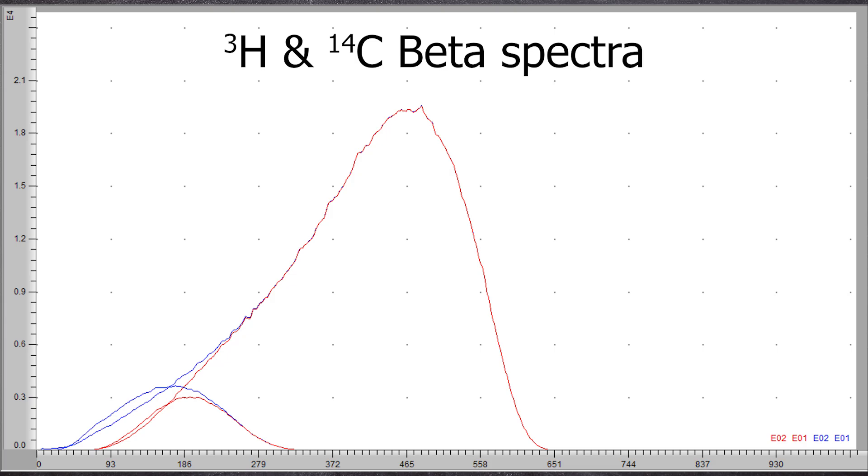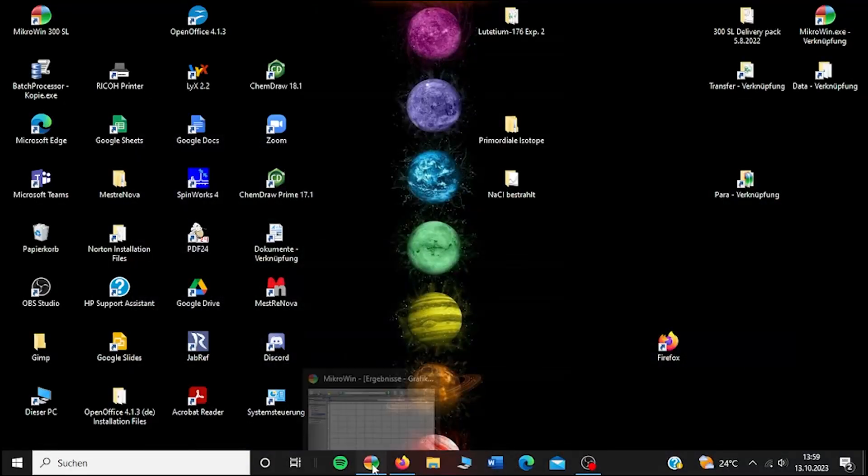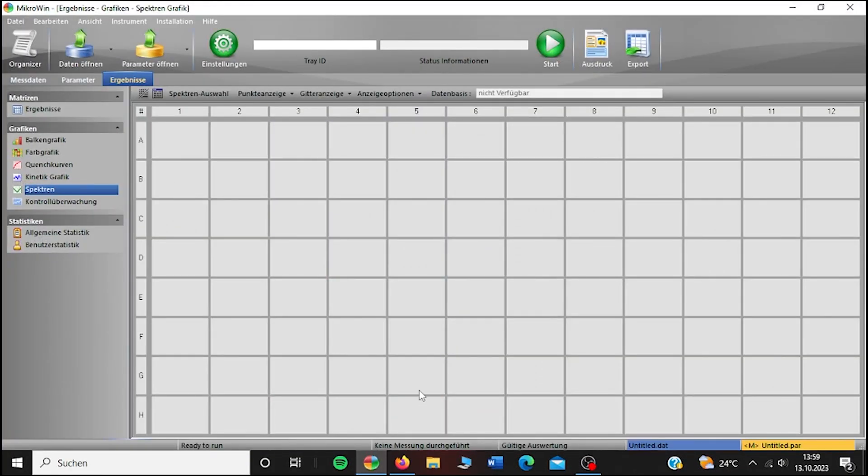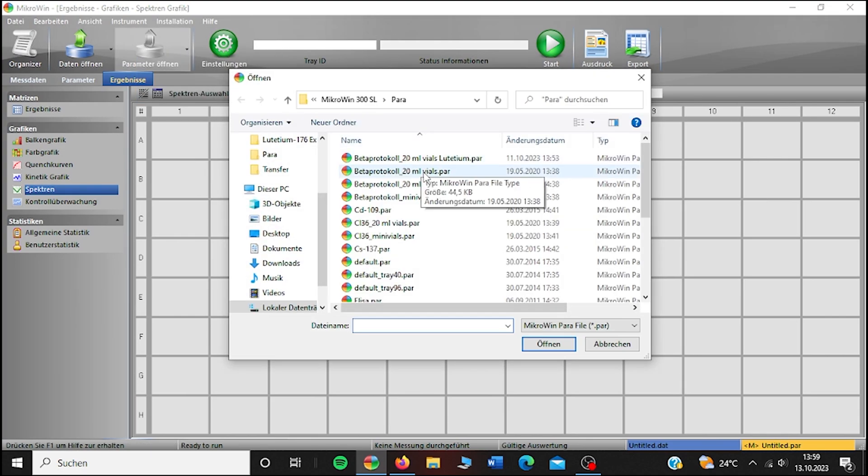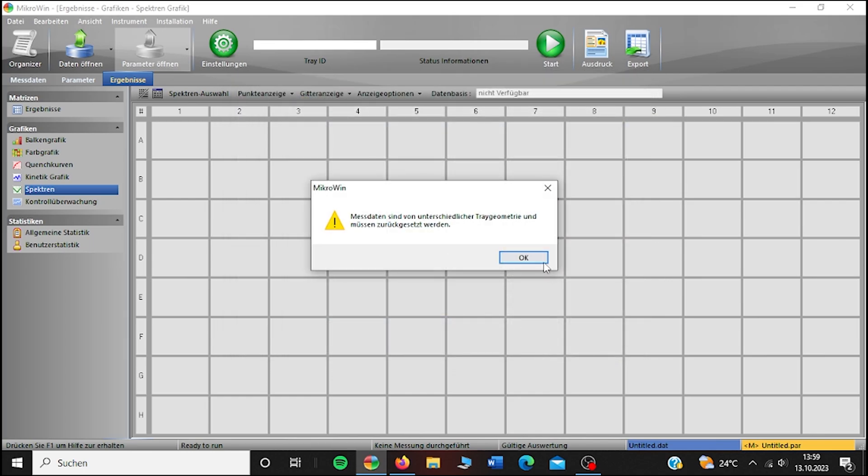Now, this part is only important for those who really want to understand how to operate this device and learn about the effects during the measurement. How do you start this measurement? The software is called Microwin. First, a parameter must be selected. This parameter gives the device a rough idea of what kind of samples are in there. For example, is it a 20-milliliter vial or a 5-milliliter vial?